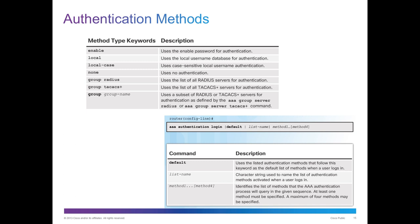Now let's look at the different method types. Here we have the example: AAA authentication login. We can do a list name and multiple methods. Methods could be enable — this will use the enable password for authentication. We could do local, which is the local username database. We can also do local-case, which is a case-sensitive local database. We could do no authentication, or we could do groups based off of RADIUS or TACACS+, or group names as a subset of RADIUS or TACACS servers.